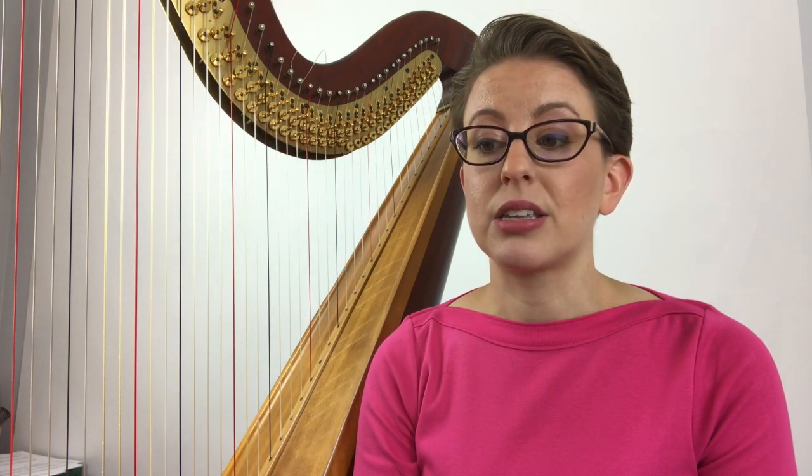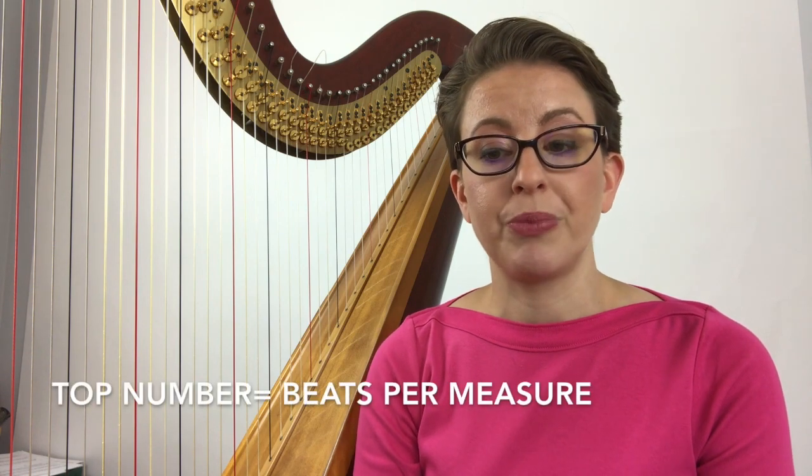The top number indicates the number of beats per measure. So when we talk about the measure we talk about one measure that's identified by the bar lines, and within that one measure we're going to have beats. And in 4-4 we're going to have four beats in one of those measures.